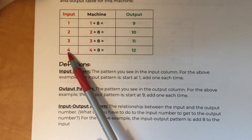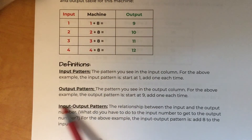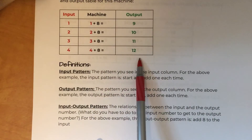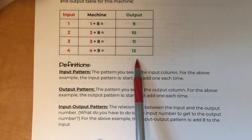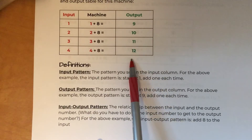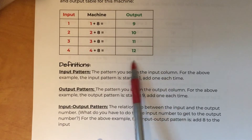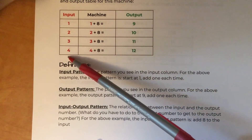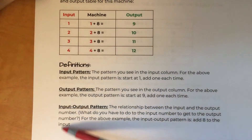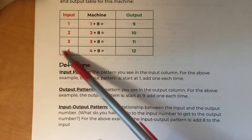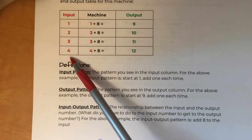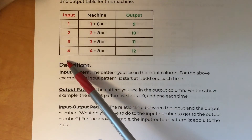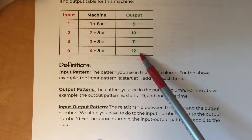A good test to know if you've figured out the pattern is to pick an input value like 100 and calculate the output directly. Nobody is going to extend a pattern all the way to 100 just to find the output, so if you can get there directly, you definitely know the rule. Pick an input you're not going to do the long way and see if you can jump straight to the output.